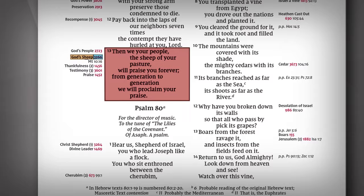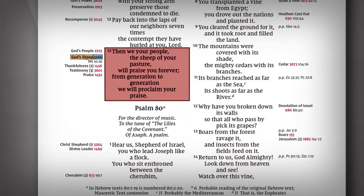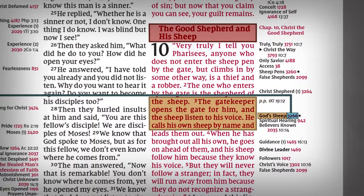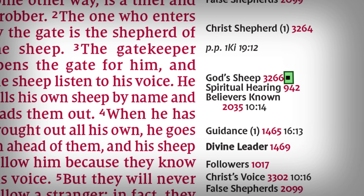If you turn to that verse, you'll find the next corresponding reference prompting you to visit Matthew 10:16. If you follow the entire chain for 3266, God's sheep, you will end at John 10:3. This time, instead of a forward reference, there's a square symbol, meaning you've come to the end of the chain of references for this topic.